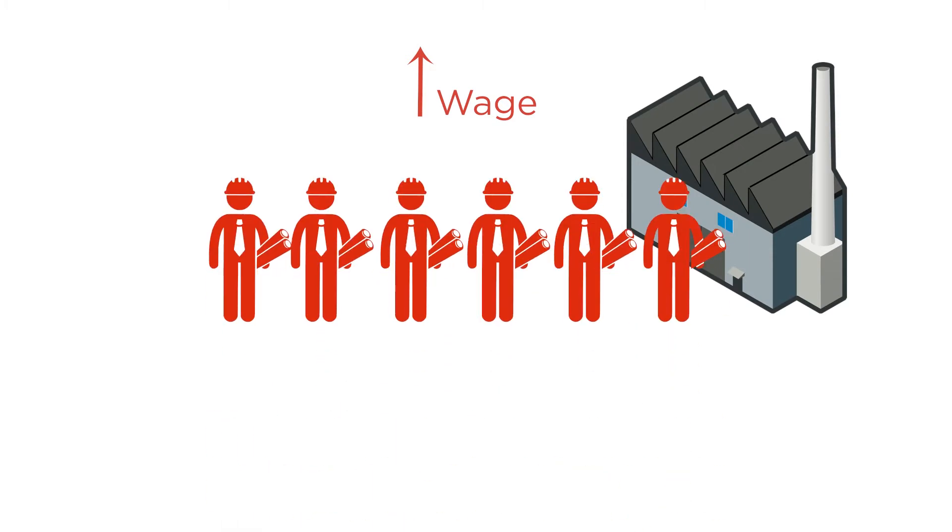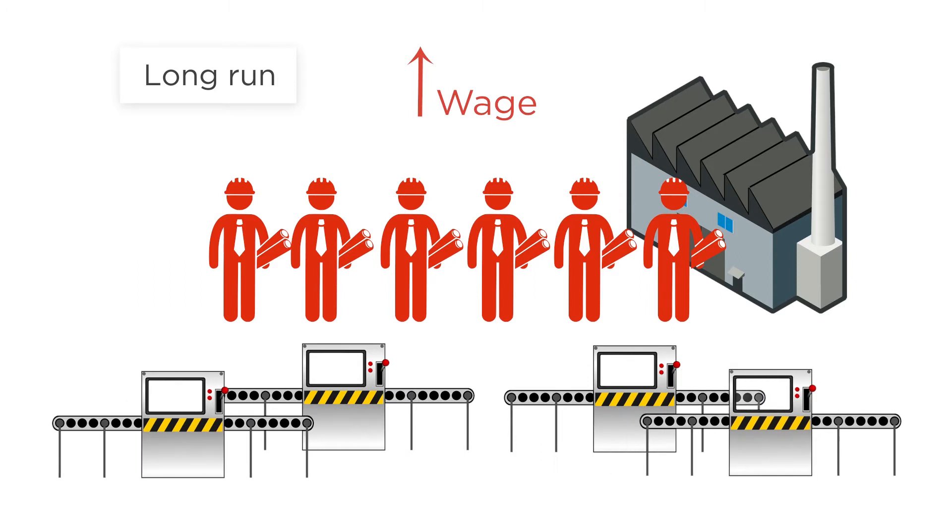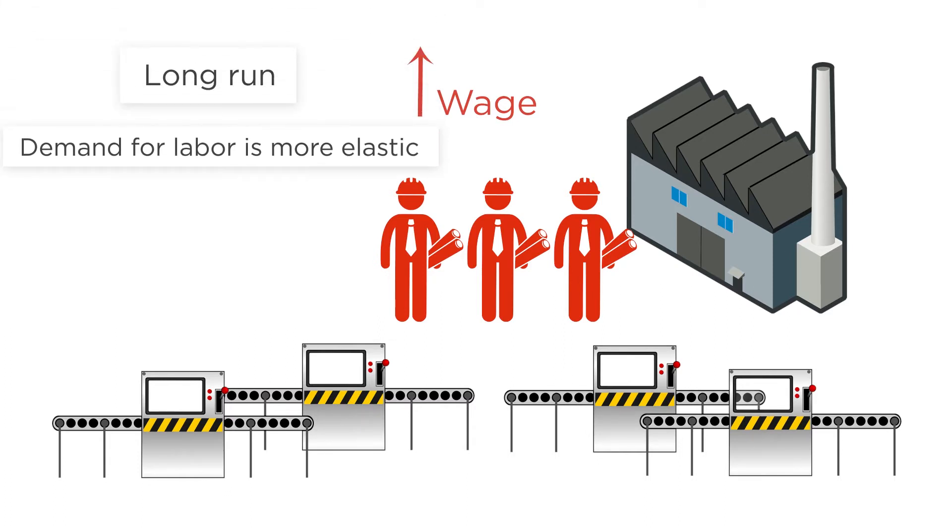What difference will that make for the demand for labor? Suppose the wage goes up in the short run. In that case, the firm might not want to change its workforce much since it wants to keep producing at a certain level, and it can't add more machines to help with the work. But in the long run, if wages go up, the firm might add machines to replace workers, and its demand for labor will fall. So in the long run, demand for labor is more elastic than it is in the short run.